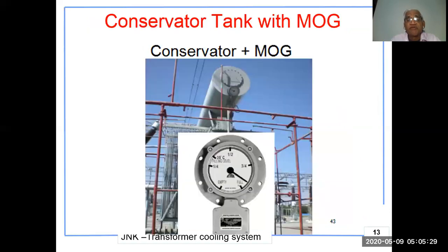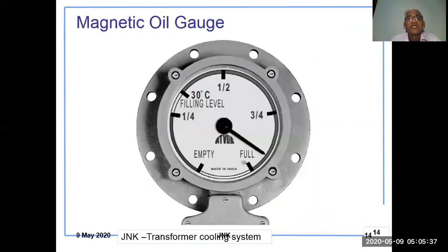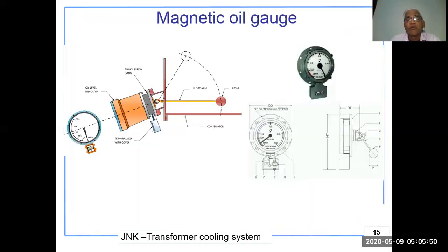Here you can see a conservator tank with a magnetic oil gauge (MOG) fitted on it. The MOG offers the advantage that the connection between the air and the meter is not direct — it works through a magnetic mechanism — and this is how the magnetic oil gauge is fixed onto the conservator, so there is no oil leakage.